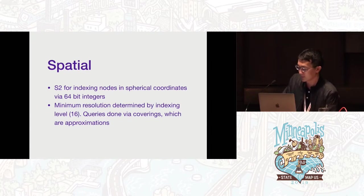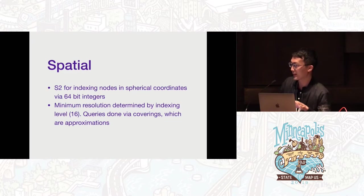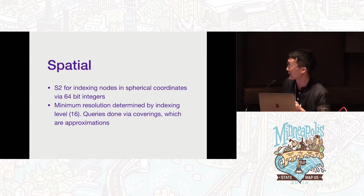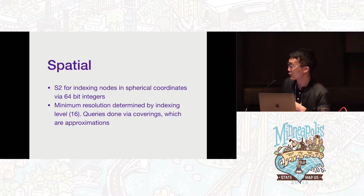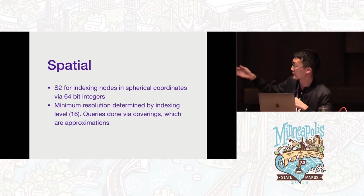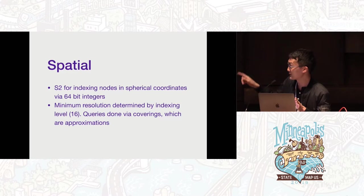For spatial indexing, I wanted to use a library that did not work in Web Mercator, because many consumers of the data will be projecting to something different. There's a library by Google called S2 Geometry for indexing nodes in spherical coordinates via 64-bit integers. It breaks the world down into cells, and each cell has a 64-bit cell ID. These cells at each level have a resolution. I chose to do all the indexing at level 16, which is a good trade-off between speed and size. All queries are done via cell coverings, which are approximations. If your query space is approximate, you might get some data outside of it, but you can always clip it afterwards.